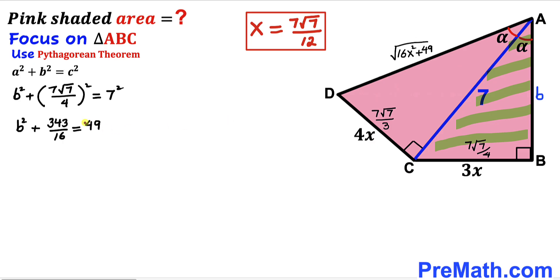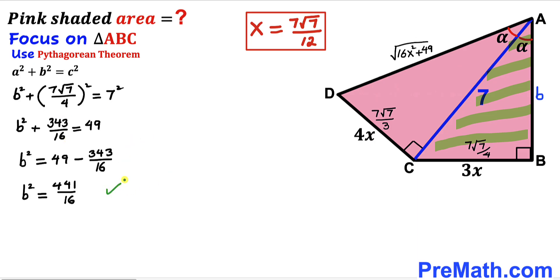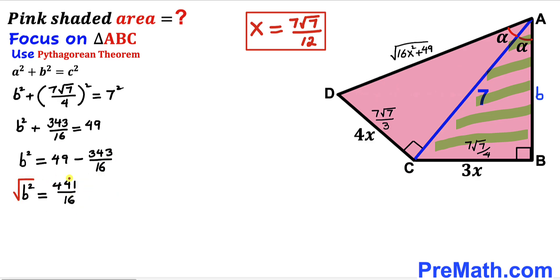Now I'm going to move the fraction 343/16 to the other side, and subtracting gives us 441/16. Taking the square root on both sides, our b value turns out to be 21/4.